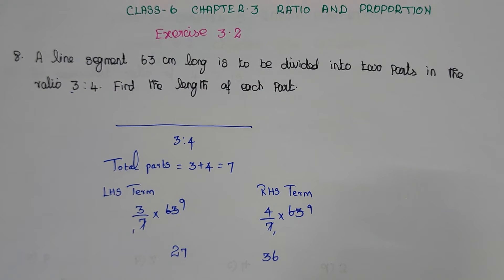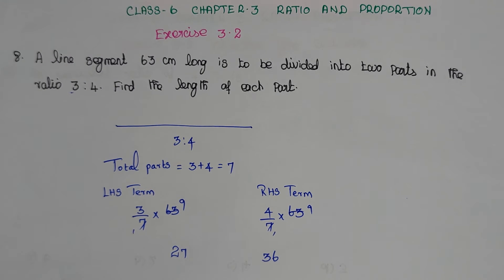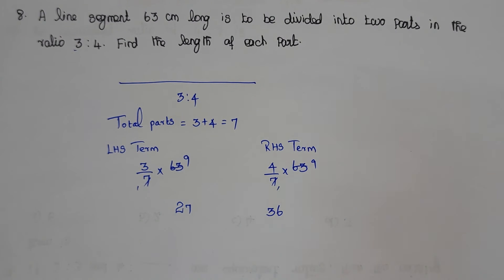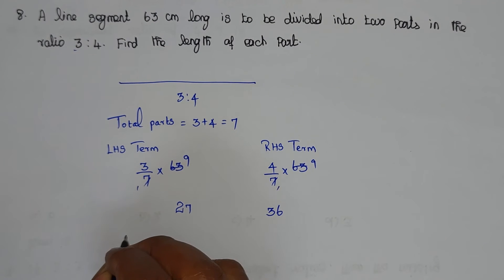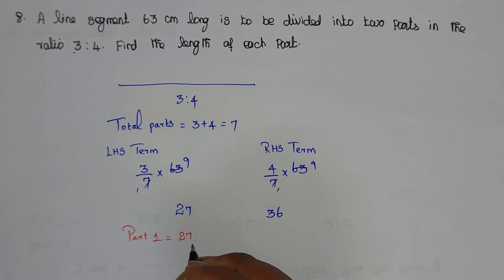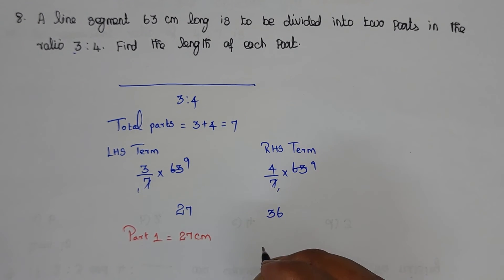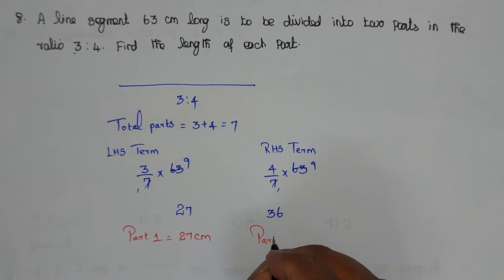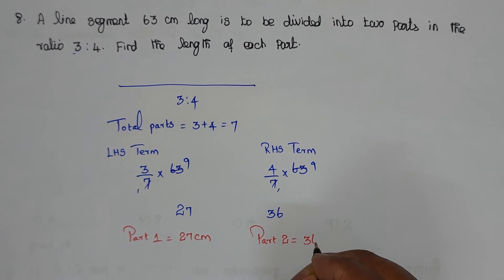Now, in the line segment split: Part 1 equals 27 cm, and Part 2 equals 36 centimetres.